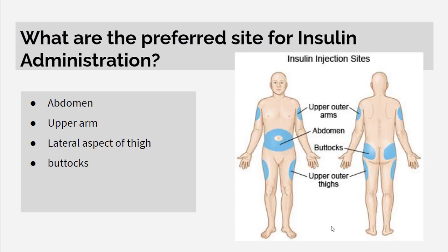What are the preferred sites for insulin administration? They are the abdomen, upper arm, lateral aspects of the thigh, and buttocks. Divide the sites into 4 quadrants and use each anatomical part on one side to prevent tissue dystrophy.